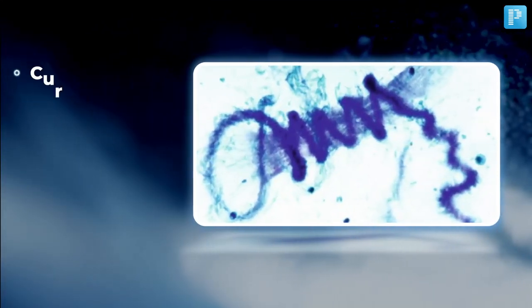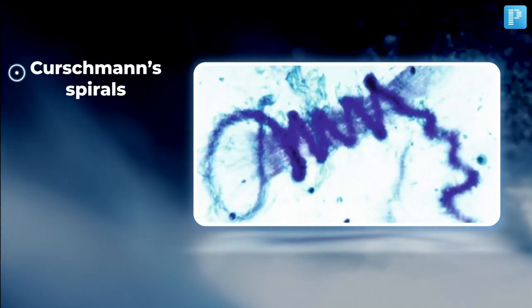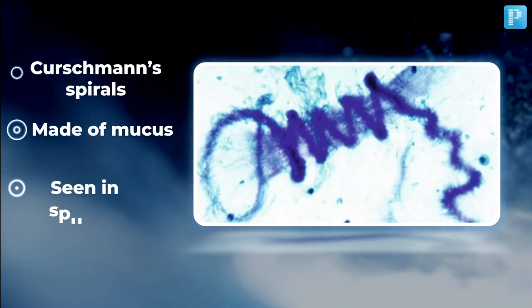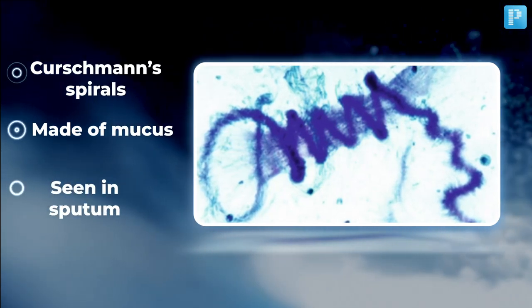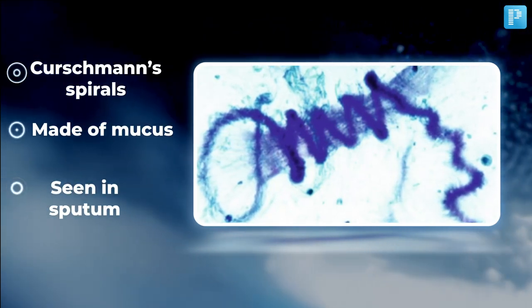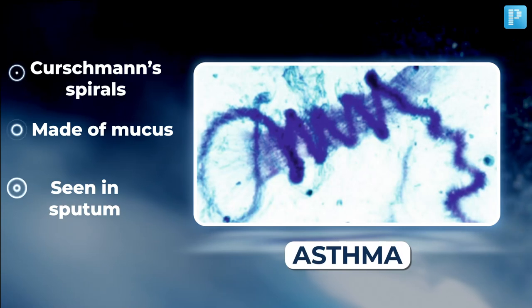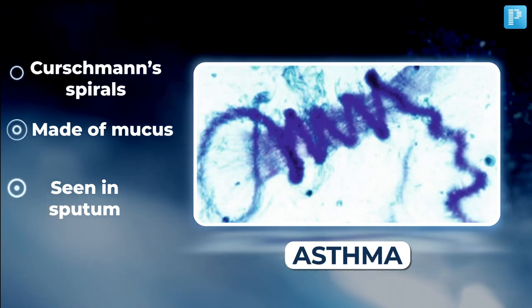Let's start with our first image. It showcases Kershman spirals made of mucus, seen in sputum. What could this be? If you guessed asthma, you are absolutely correct. Well done.